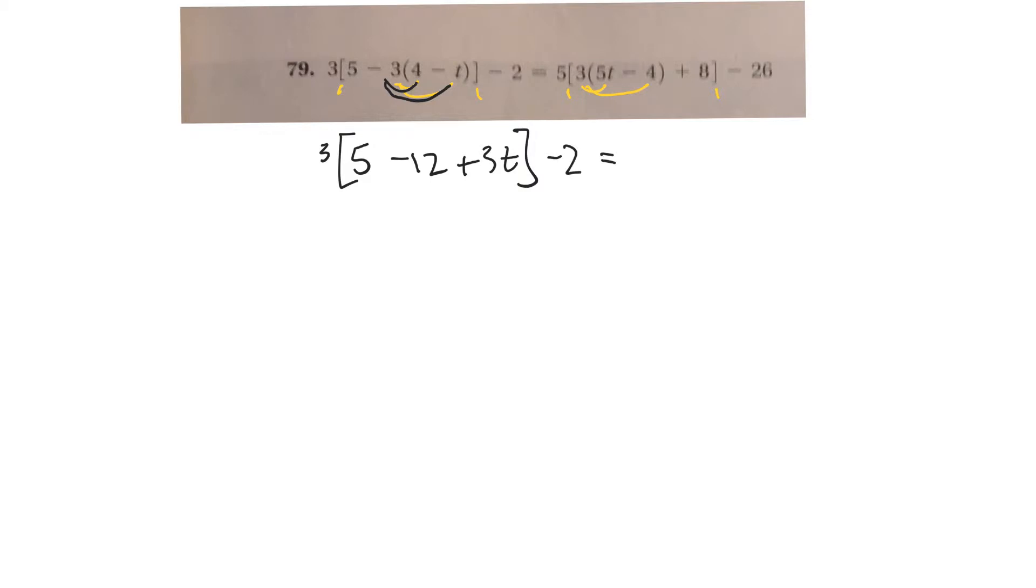Now on the other side, I need to do this stuff first. So I've got to leave the 5 out. And then 3 times 5 would be 15t. 3 times minus 4 is minus 12. Plus 8. Notice that once I multiply that through, I get rid of those brackets. And then minus 26.